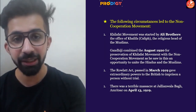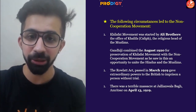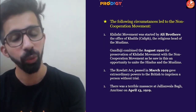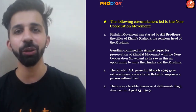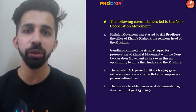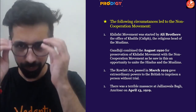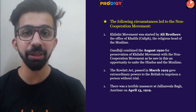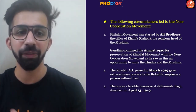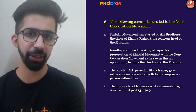Gandhi ji took advantage of this situation. He thought: let's unite and support the cause of Muslims, because supporting them would foster unity between Hindus and Muslims. The second homework question: what led to the division between Hindus and Muslims? Gandhi ji thought this unity would help India gain independence.